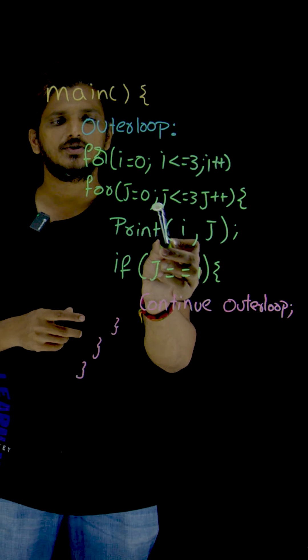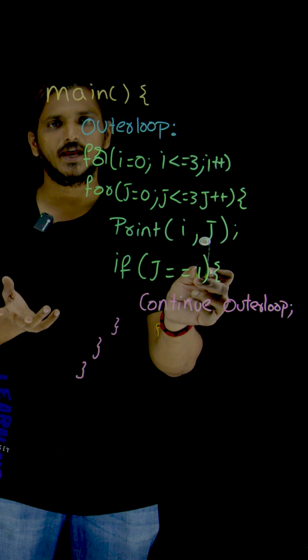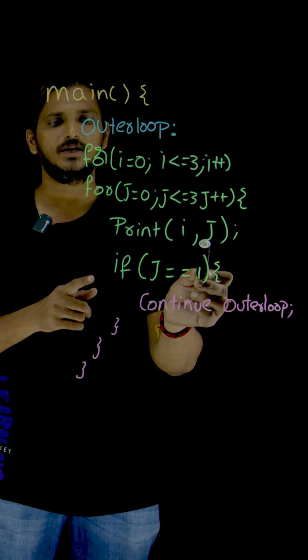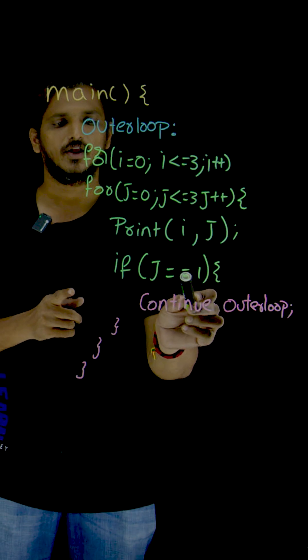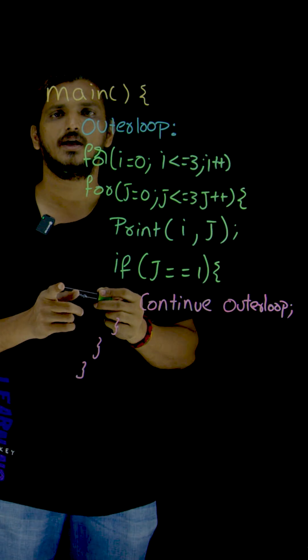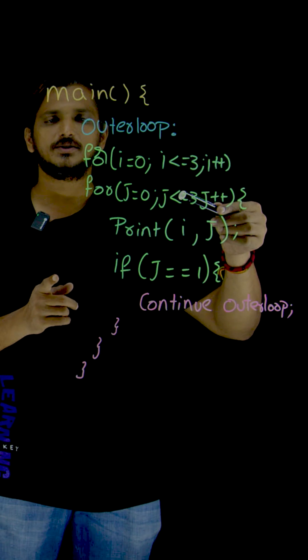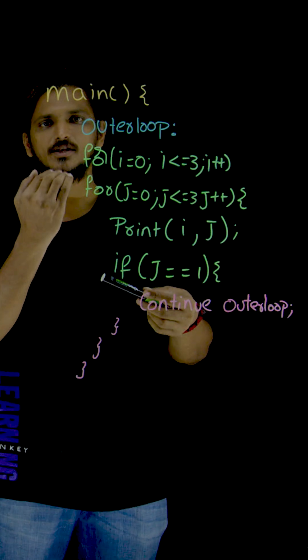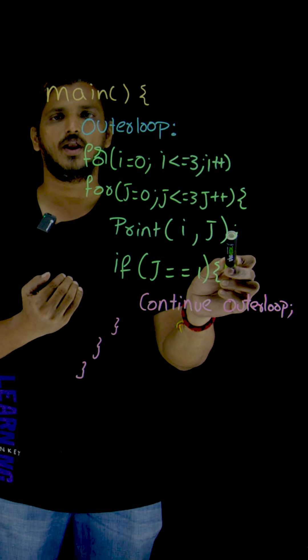For i is equal to 1, j is equal to 0, j is equal to 1. Again, 1, 0, 1, 1 will be displayed. So whenever j is equal to 1, again move to the outer loop. So the outer loop is moving to i is equal to 2. 2, 0, 2, 1.